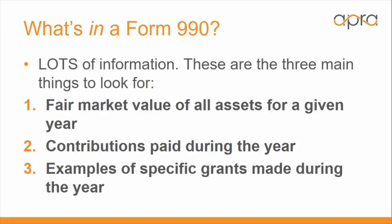The second thing to look for are contributions paid during the year — those are grants awarded to different non-profit organizations — and that gives you a sense of what the foundation is interested in and supports, as well as the scope and scale in terms of dollar amounts awarded. The third thing to look for are examples of specific grants, where you'll see a listing of different organizations receiving funding from the foundation along with those dollar amounts.